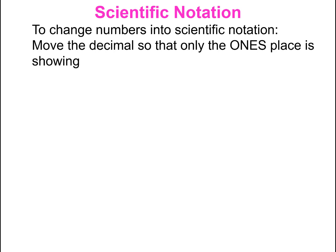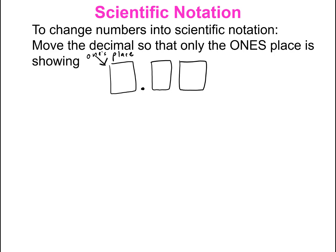At the very beginning of the video, we're going to cover very briefly how to put numbers into scientific notation. To change numbers into scientific notation, we move the decimal so that only the ones place shows. When you're putting a number into scientific notation, you want your result to look like one number in the ones place, followed by however many decimals the question may specify, times 10 to some exponent.